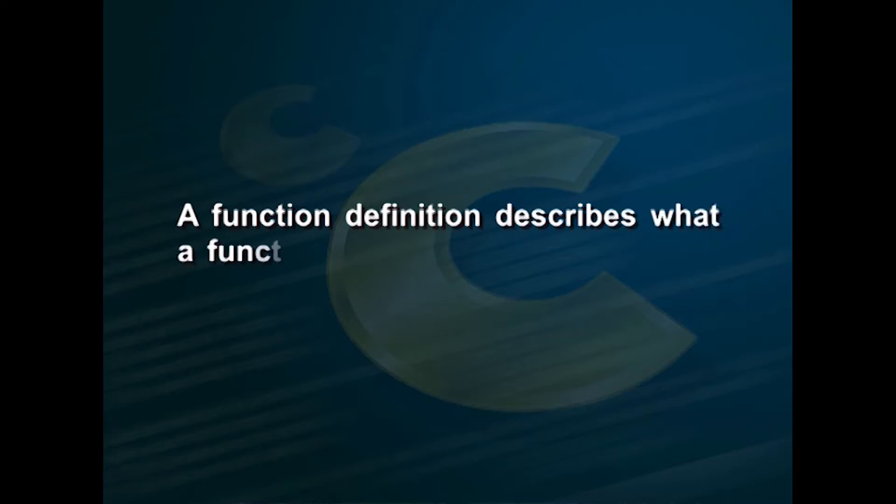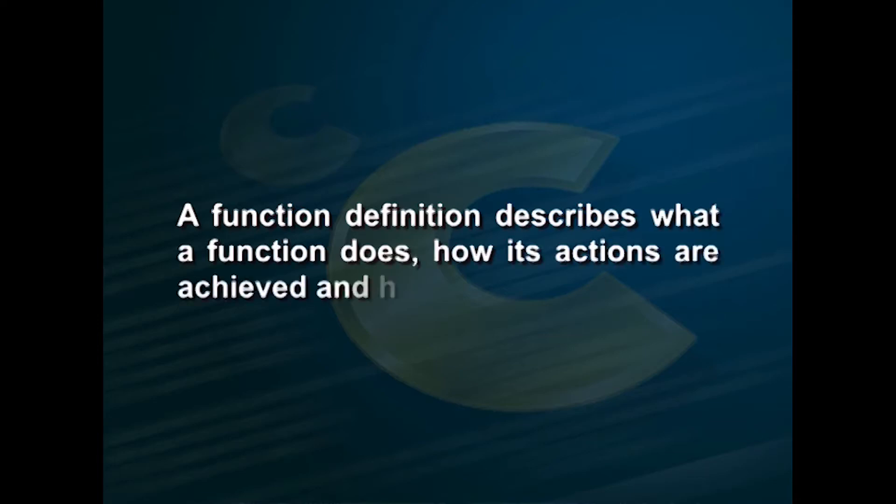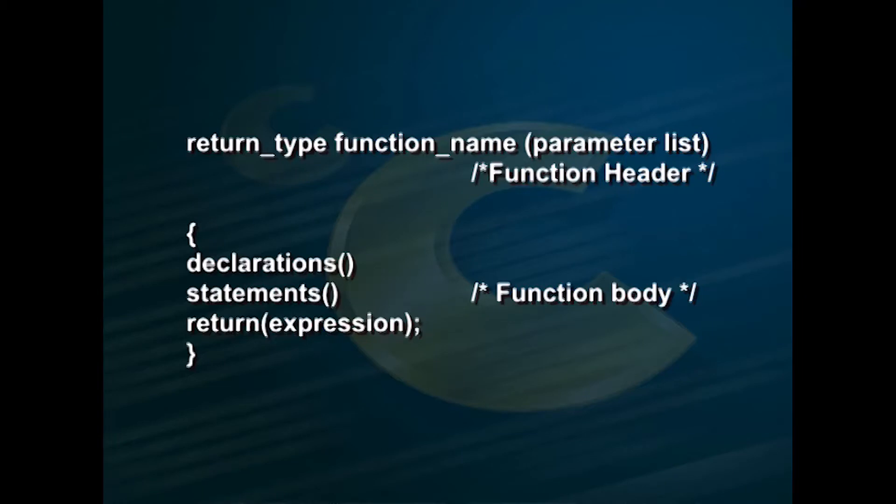A function is a self-contained program segment that carries out some specific well-defined task. The definitions of functions may appear in any order in a program file because they are independent of one another. A function can be executed from anywhere within a program. Before using any function, it must be defined in the program. A function definition describes what a function does, how its actions are achieved, and how it is used. It consists of a function header and a function body.